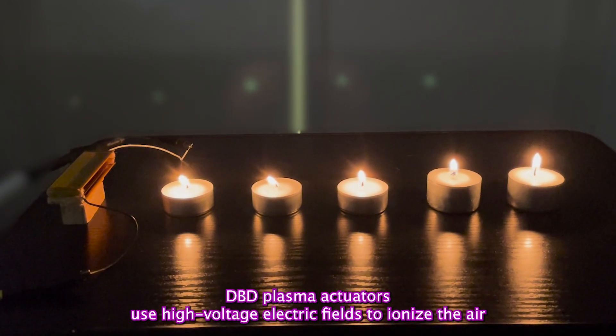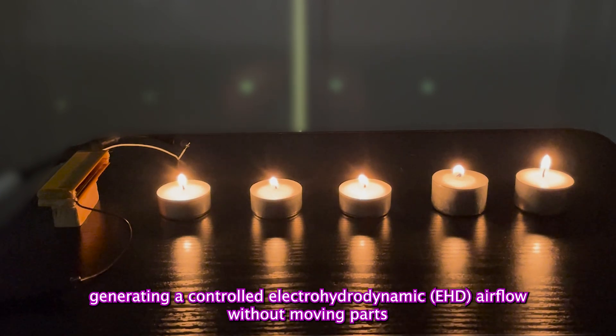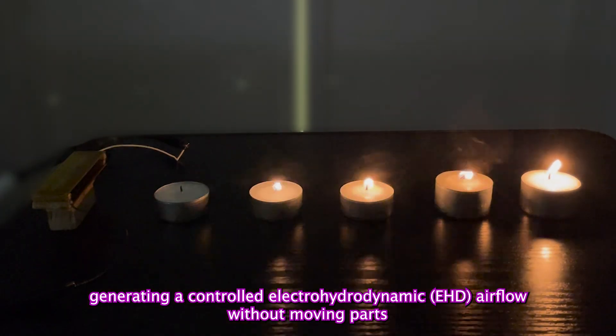DBD plasma actuators use high-voltage electric fields to ionize the air, generating a controlled electrohydrodynamic (EHD) airflow without moving parts.